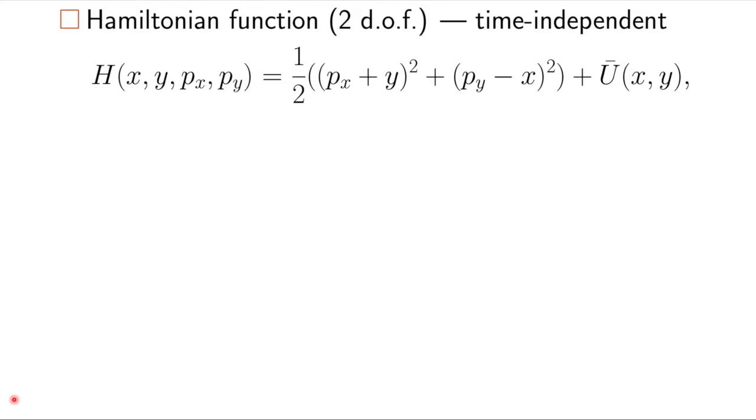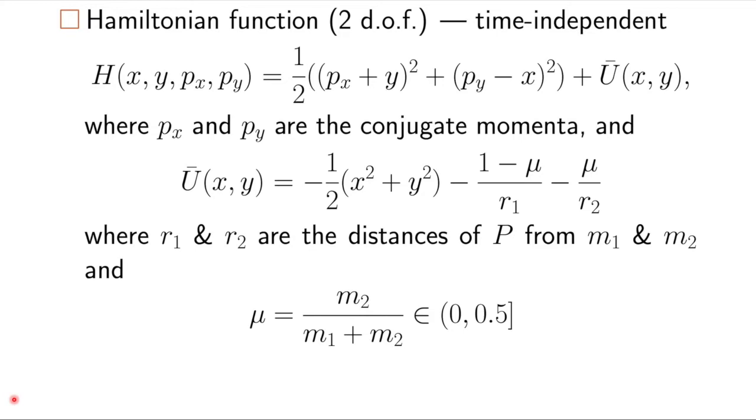We've got the conjugate momenta, and then we have the effective potential, which we plotted previously. This is in a non-dimensional form, where the only parameter is mu. This is the mass ratio of the smaller mass, M2, to the sum of the two masses. And in the solar system, this can be anywhere from 10 to the negative 6 to 10 to the negative 2.